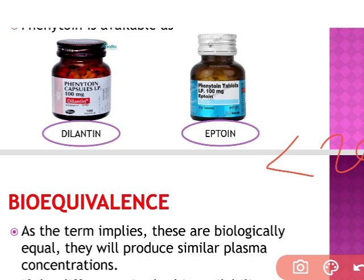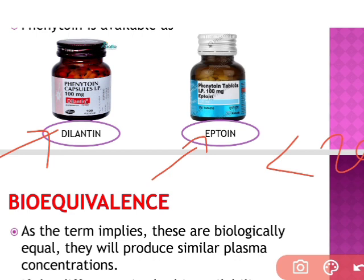It is said that if you are using an antiepileptic drug like phenytoin, you have to continue with the same brand. Because there is a chance of differences in plasma concentration and bioavailability between brands. If you started with Dilantin, continue with Dilantin only. If you started with Aptoin, continue with Aptoin only. Otherwise, differences in bioavailability could lead to therapeutic failure and the patient may have epileptic attacks again. So if you want to maintain the plasma concentration, continue with the same brand only. This is the importance of bioequivalence.